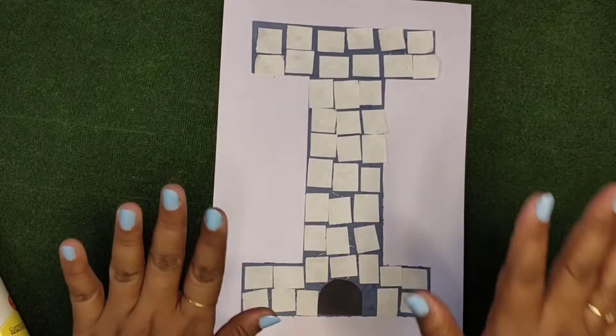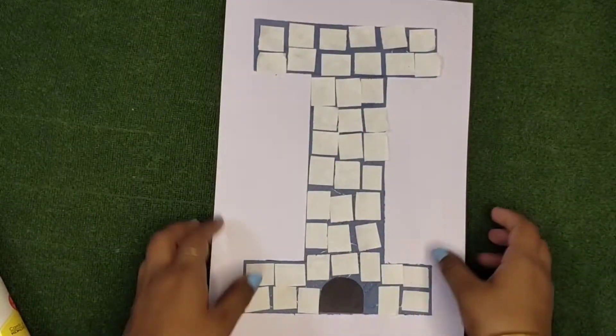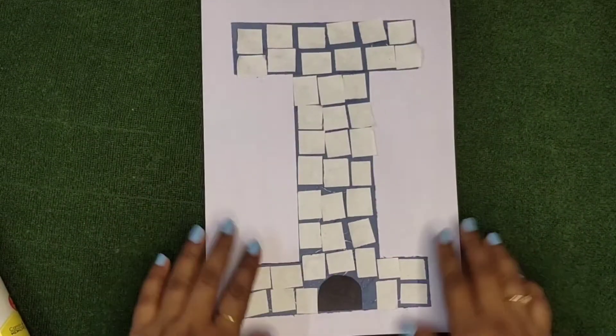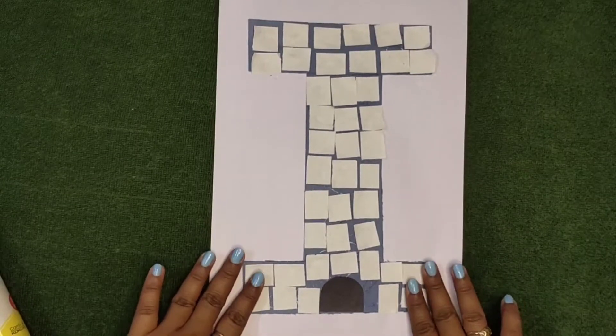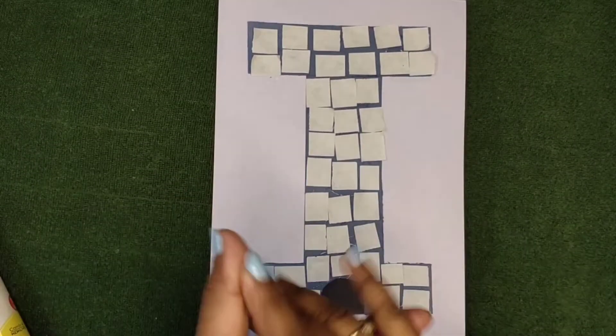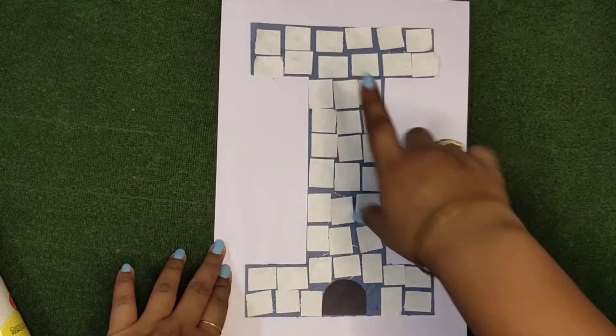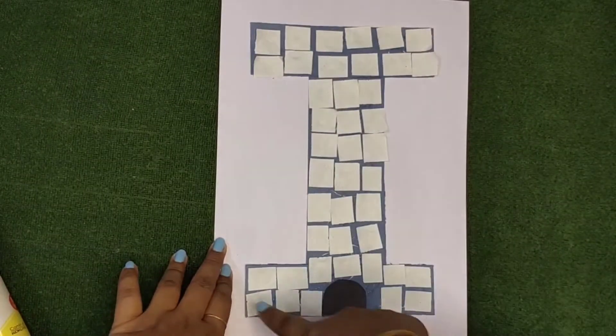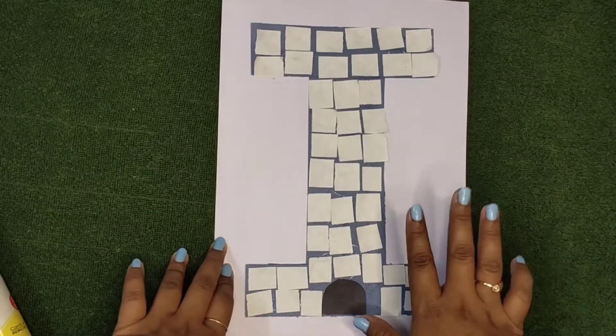So this is our capital I craft. We made an igloo. See this is an igloo. And I for igloo. So we have made igloo today. And letter I sounds E. E igloo.